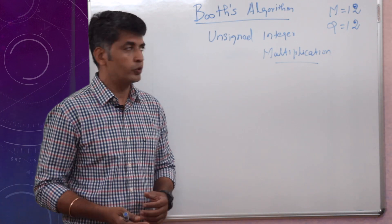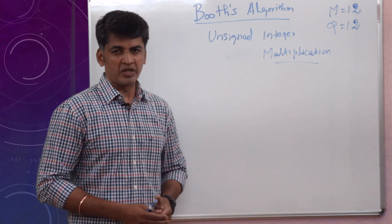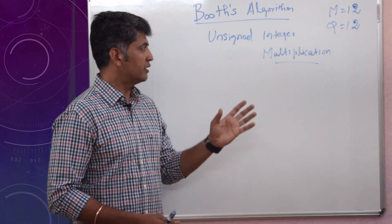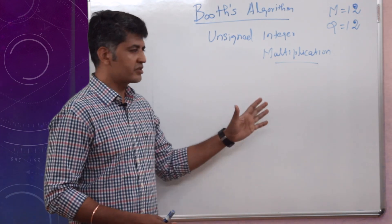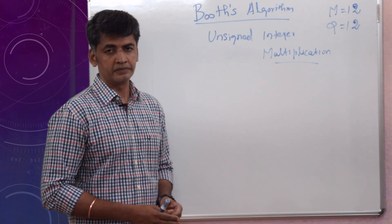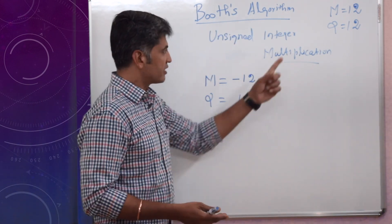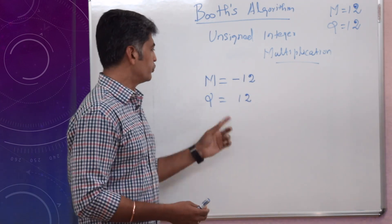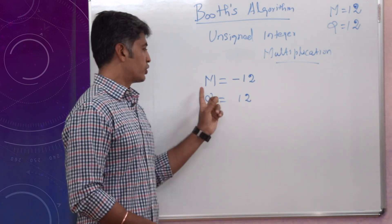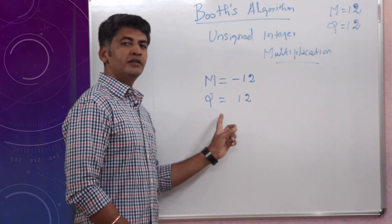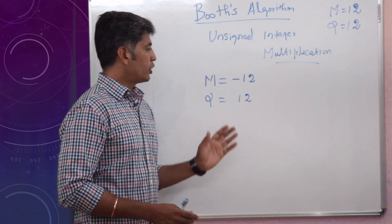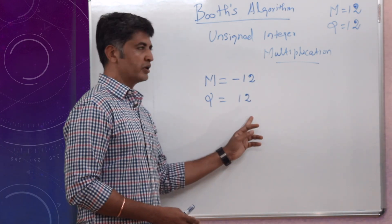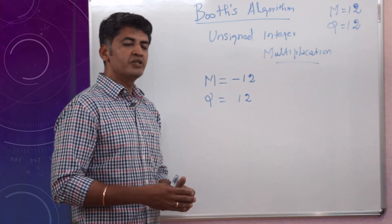In this video we are going to discuss Booth's algorithm for signed integer multiplication. In the previous video we discussed an example where both the multiplicand and multiplier were positive 12. In this video we are going to take a different example: one negative number and one positive number, where the multiplicand is minus 12 and the multiplier is positive 12.